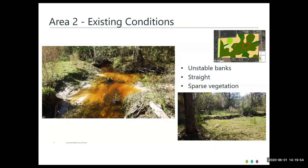This is Area 2, a little further in the more natural part of the Mayaka River. As you can see, it had unstable banks, was relatively straight, and had sparse vegetation — some grazing had been going on here. While there wasn't as much room to work with as in Area 1, there was enough room to fit some individual bends to create a more meandering flow path and help dissipate energy.